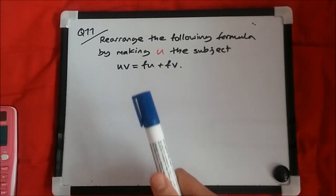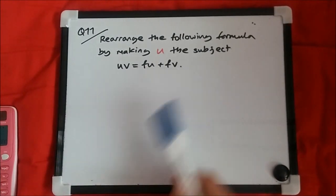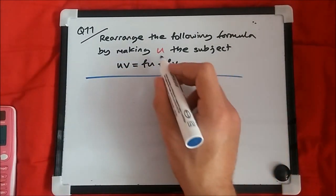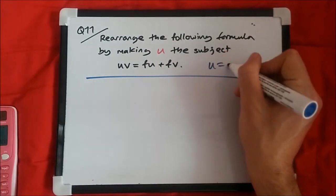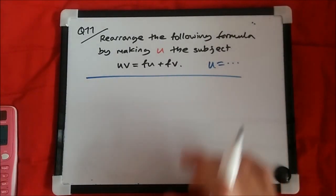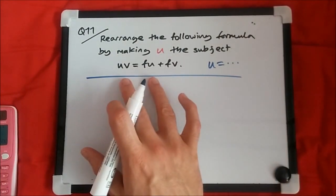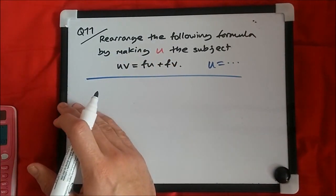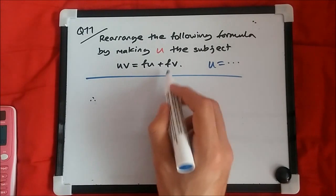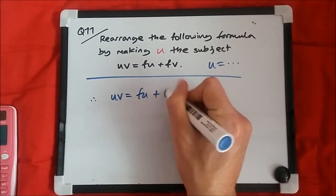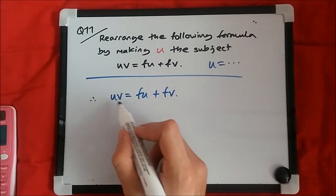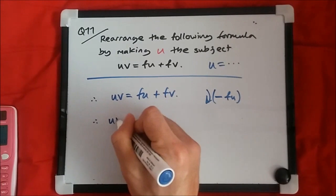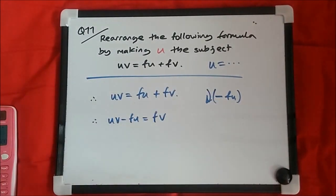Question 11: rearrange the following formula by making u the subject. The equation is uv equals fu plus fv. Making u the subject means we want an equation that looks like u equals some other terms — we want to isolate u. There are two places where u appears. First, put all the u terms on the left-hand side: subtract fu from both sides to get uv minus fu equals fv.